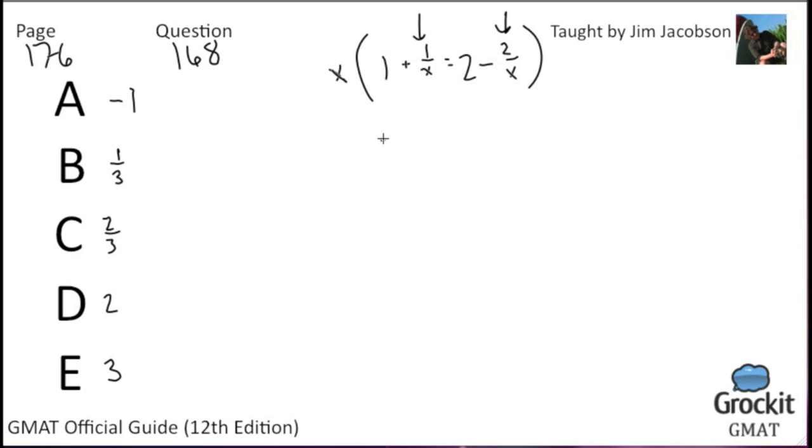x times 1 is x, x times 1 over x gives us 1. 2 times x equals 2 minus... sorry, this equals 2x, 2x minus, and then this equals, of course, 2. That's one big minus there.